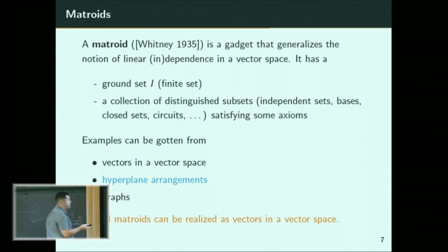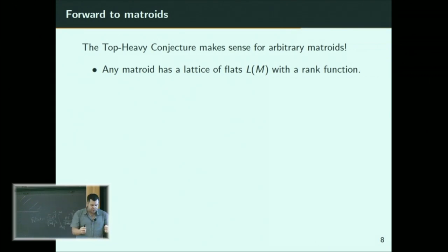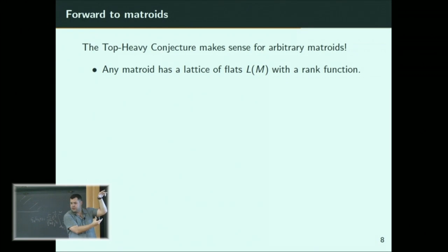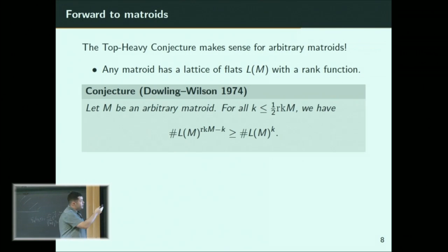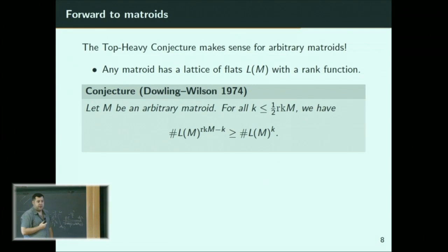Since we don't have a vector space, we don't have geometry. But the top-heavy conjecture makes sense for arbitrary matroids because one of the equivalent definitions of a matroid is that it comes equipped with a lattice of flats — the ranked poset I was using throughout. It has a rank function, so it makes sense to write down the top-heavy conjecture. That's actually the generality Dowling and Wilson wrote it in in 1974. The conjecture is known for realizable matroids but not in general.